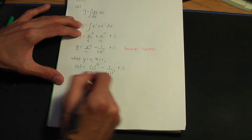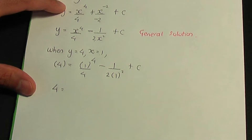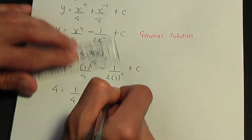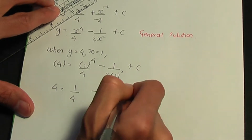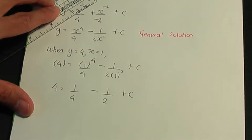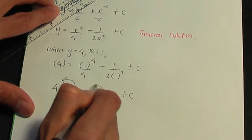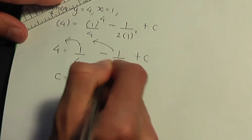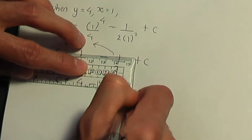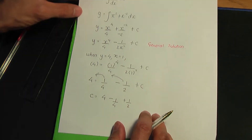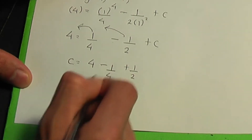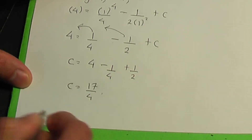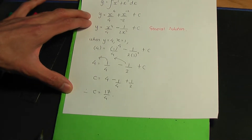Evaluating: the left-hand side is 4; 1 to the 4 is 1 over 4; minus 1 divided by 2 times 1 squared is minus a half; plus C. Bringing the numeric terms to the left, C equals 4 minus a quarter plus a half, which gives 17 over 4. So that is the value of our integration constant C.